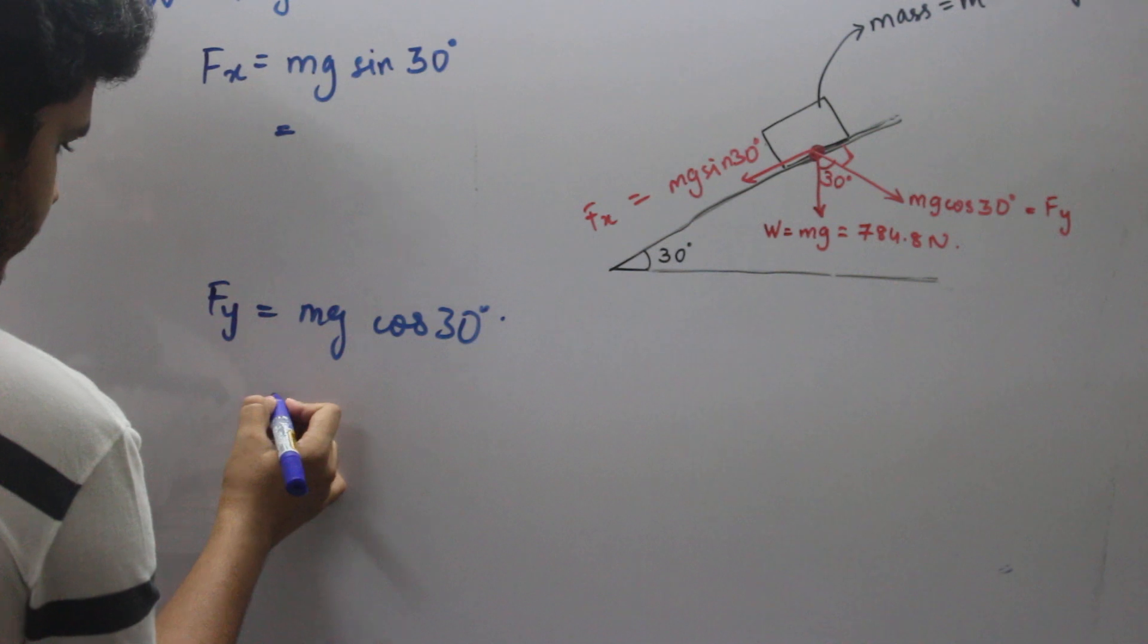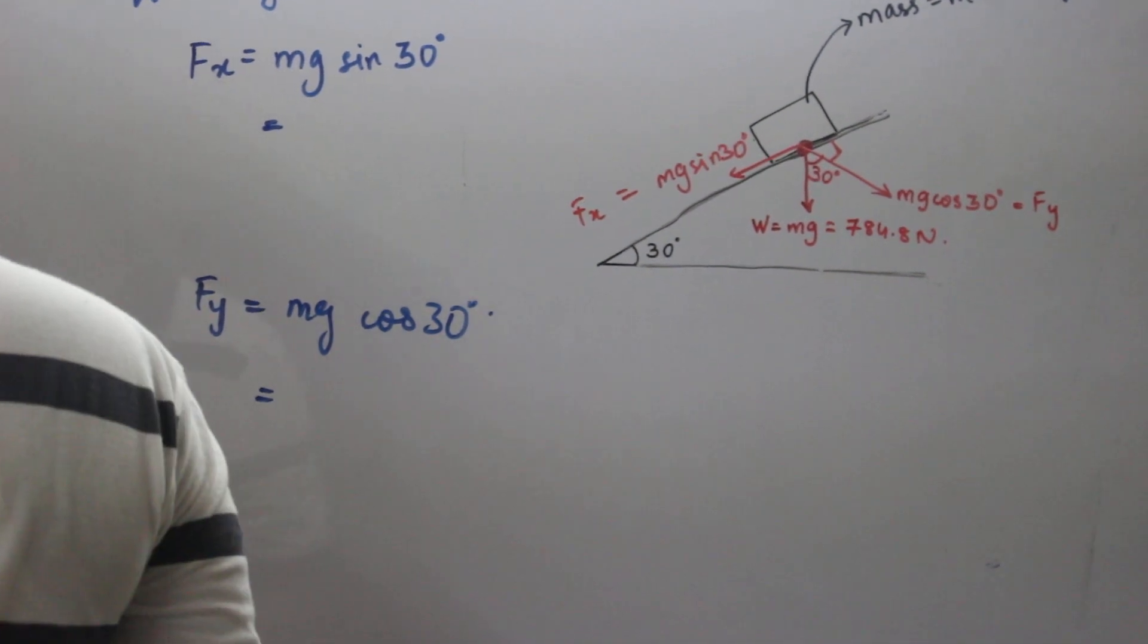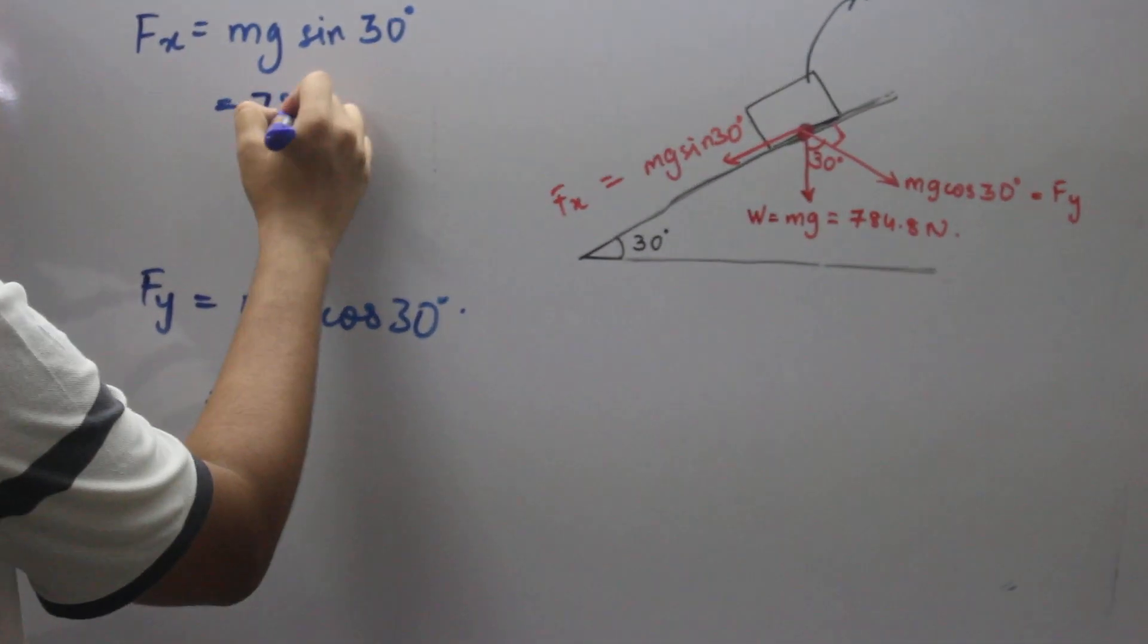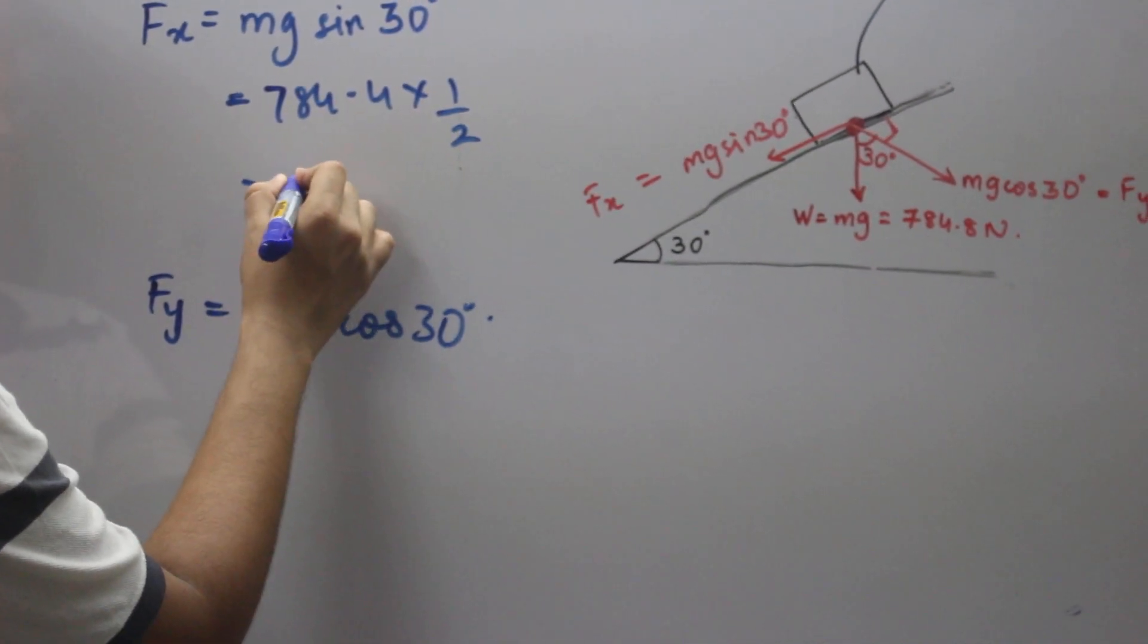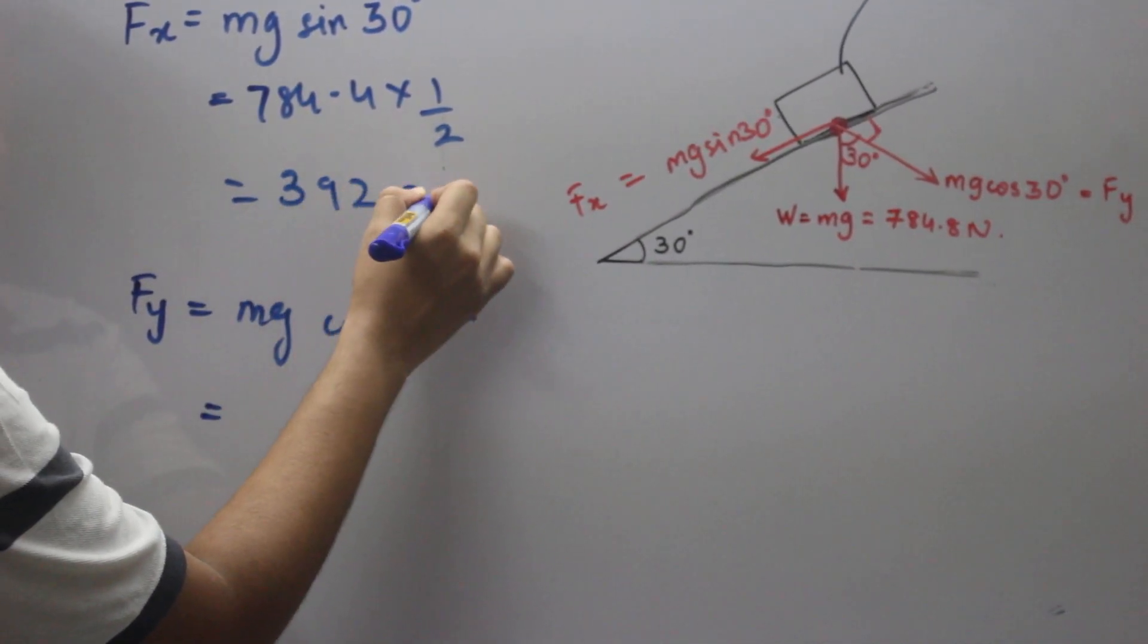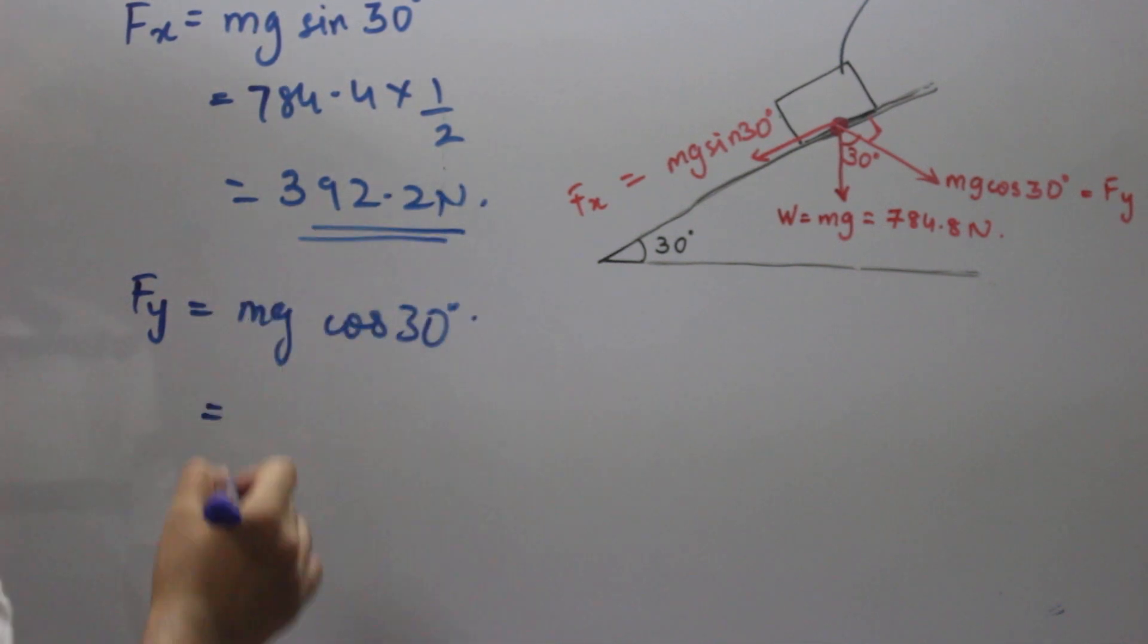f_x equals 784.4 times 1 by 2. That gives me 392.2 newtons. You can calculate with the help of a calculator.